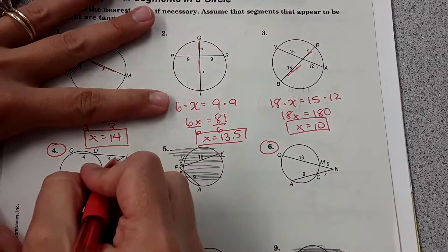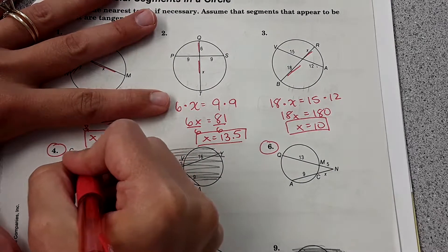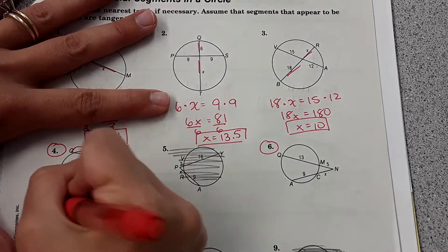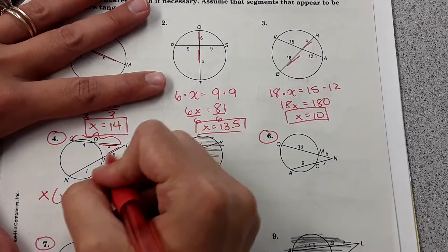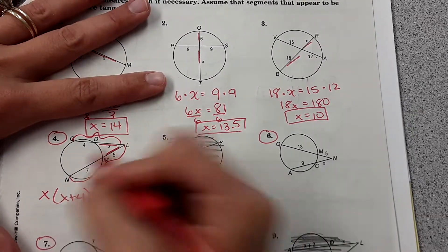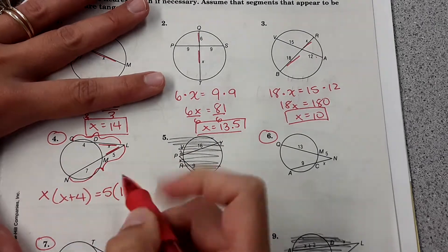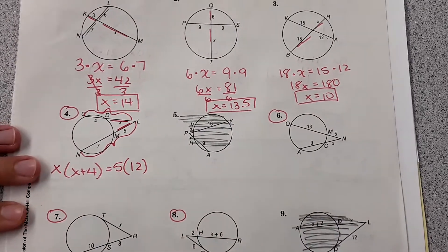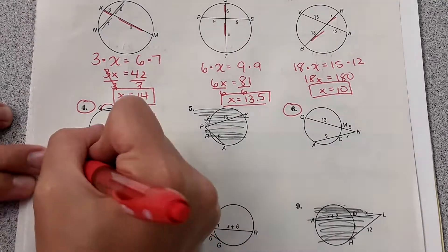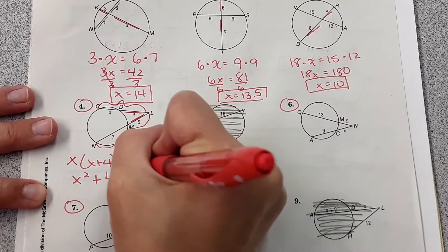Number 4. The concept is you're taking this segment length, which is x, and multiplying by this whole segment length, which is x plus 4, equals, then you're going to take 5 and multiply it by the whole thing, 12. Where did I get 12 from? 5 plus 7 is 12.